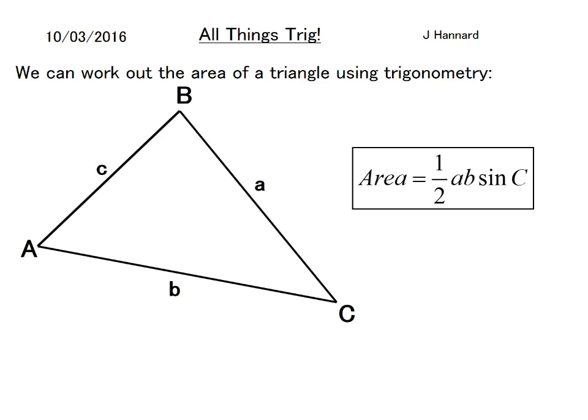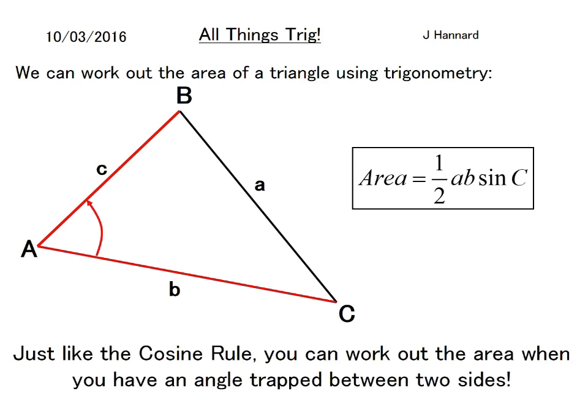We can work out the area of a triangle using trig. I think you're given this formula in the AQA GCSE further maths formula book, but not in the OCR FSMQ formula book. Area equals half ab sine C. There's b, there's c, and there's the angle. Just like the cosine rule, you can work out the area when you have the angle trapped between two sides. This would be a and b, and the angle here would be sine C.